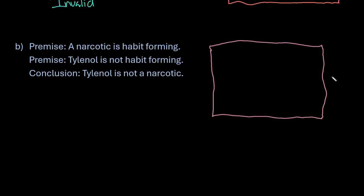Basically, if there's only one place to put the second premise then the conclusion will follow logically. If you're unsure where to put it and there's more than one place it can go, then it's going to be an invalid argument and it doesn't follow logically.